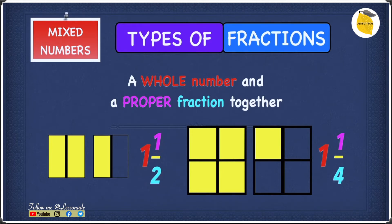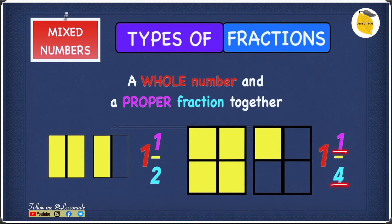So let's have a look over here. We have a whole number, which is 5, and we also have a proper fraction because 1 is less than 4, so the numerator is less than the denominator. That's also a proper fraction. So 5 and 1 over 4 is a mixed number.